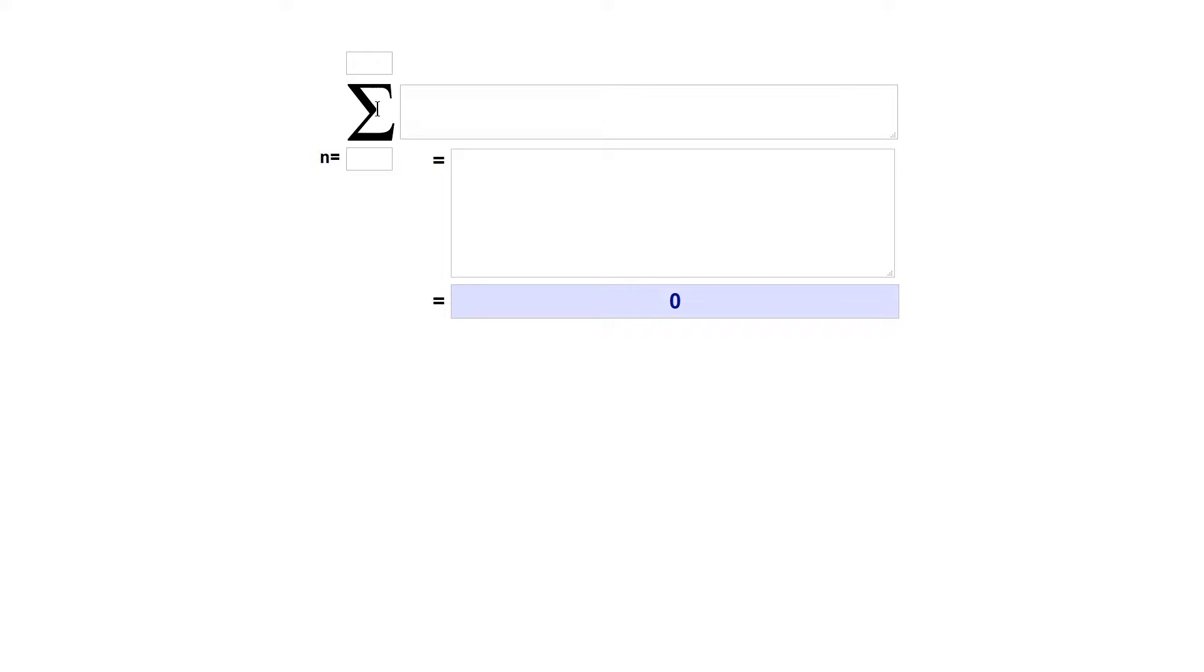Alright, so we have our sigma. We're going to put a 1 for our index. You'll see you can use any variable of course, but either i or n is common. Up here, we'll use a 5. To the right of the sigma symbol is the actual mathematical problem that we want to iterate through. In this case, we can just use n, which means we are going to use the index and we're going to iterate 5 times.